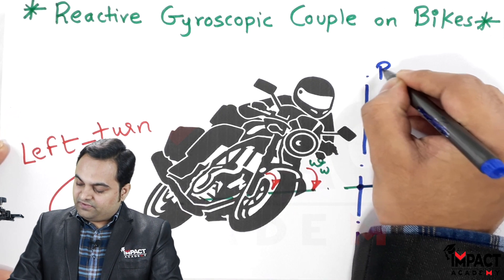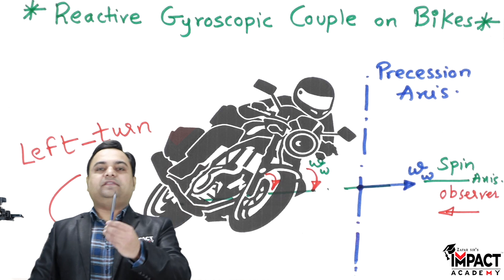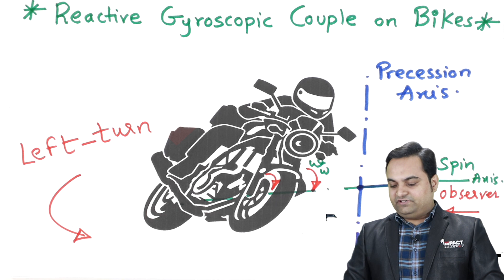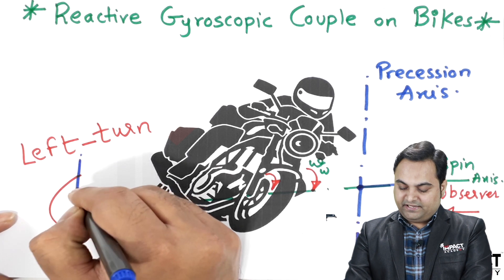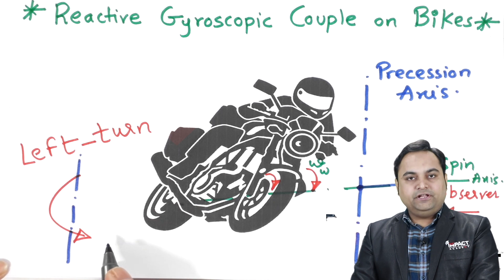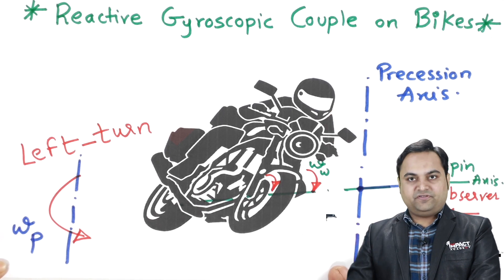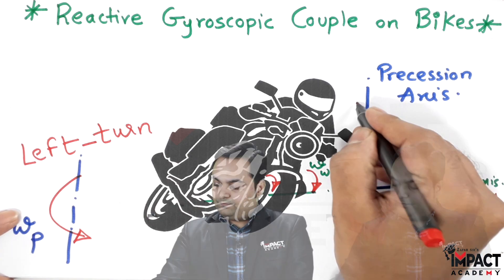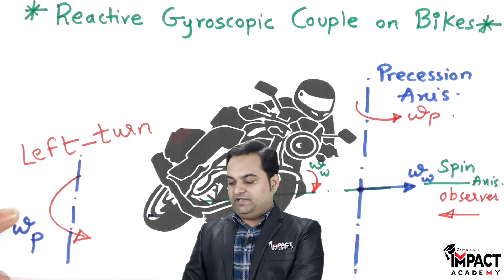This is the precession axis, and about this vertical axis the wheel is taking a turn while moving in the left direction. This left turn is taken about a vertical axis, and the velocity of this left turn is called the angular velocity of precession, omega_p. About this precession axis, we have the angular velocity of precession.